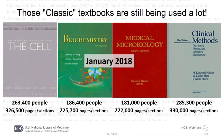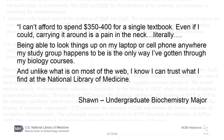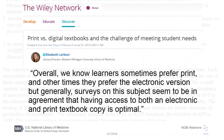Faculty who have grown up with these classic texts may feel comfortable with them, but what about students newly exposed to these disciplines in undergraduate studies? Why are they still accessing these classic texts? Here's a quote from an undergraduate biochemistry major: 'I can't afford to spend $350 to $400 for a single textbook. Even if I could, carrying it around is a pain in the neck, literally. Being able to look things up on my laptop or cell phone anywhere my study group happens to be is the only way I've gotten through my biology courses. And unlike what's on most of the web, I know I can trust what I find at the National Library of Medicine.'